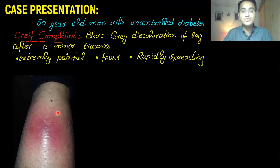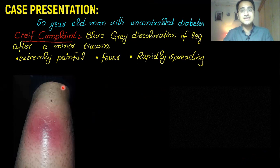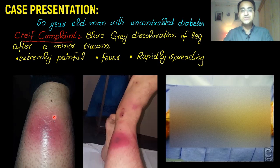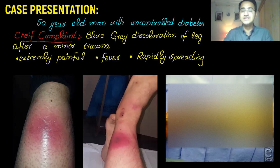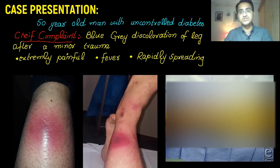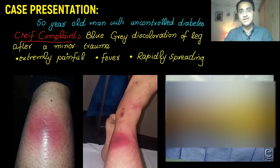This is a picture showing blue-gray discoloration. The patient says that it's extremely painful, and the patient is also having fever and this thing is rapidly spreading. Initially it was a blue-gray discoloration, then it progressed further, and now when the patient is admitted, the leg looks severely affected. This is a case of necrotizing fasciitis. How does it present, how do you diagnose it, and how do you treat it? Today we are going to talk about that.